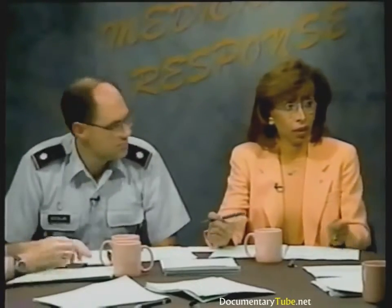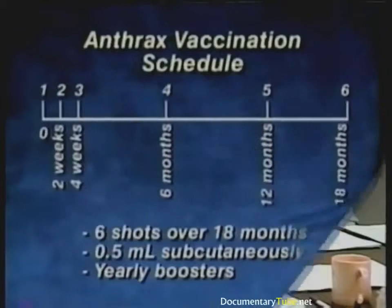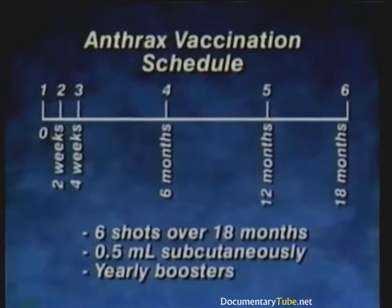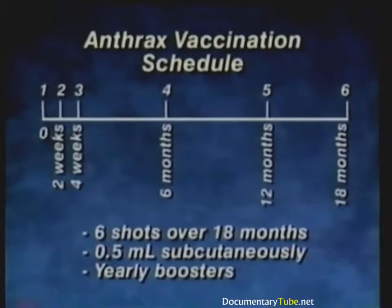The vaccine is given subcutaneously at a dose of 0.5 mL at intervals of 0, 2, and 4 weeks, followed by doses at 6, 12, and 18 months — a six-shot primary series. This initial series is then followed by yearly boosters to maintain immunity.